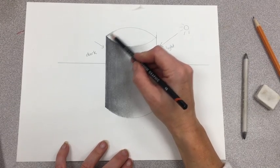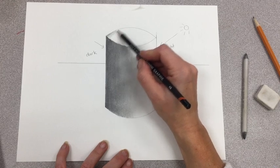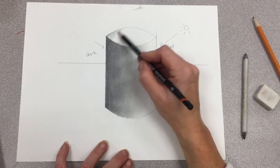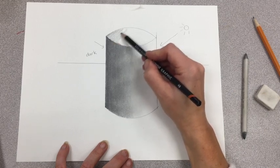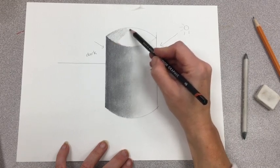Now on the inside of our cylinder, I am going to be shading everything with just kind of an even pressure, just so that I have a really medium tone. And after I go through, I'm going to smooth that out.